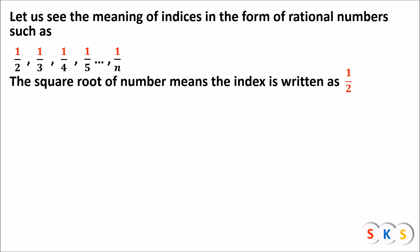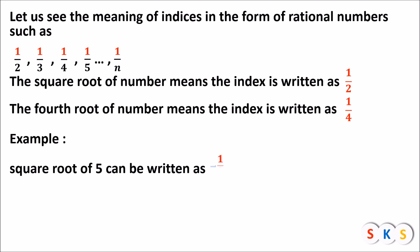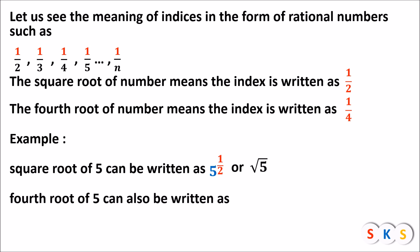The fourth root of a number means the index is written as 1 upon 4. The numerator remains 1 while the denominator changes as per the given root. For example, the square root of 5 can be written as 5 raised to 1/2, the cube root of 5 can be written as 5 raised to 1/3, and the fourth root of 5 can be written as 5 raised to 1/4. This symbol is called the radical sign.